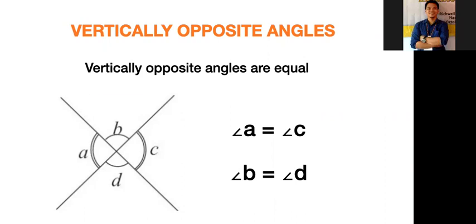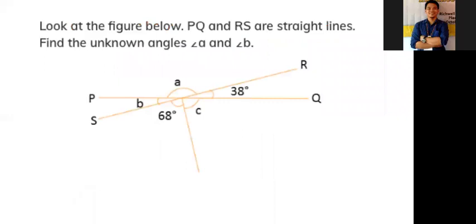Look at the figure below. PQ and RS are straight lines. Find the unknown angles angle a and angle b.